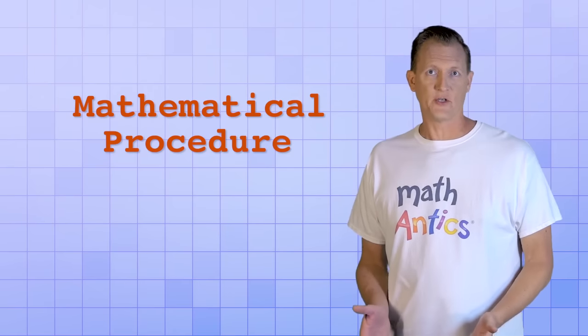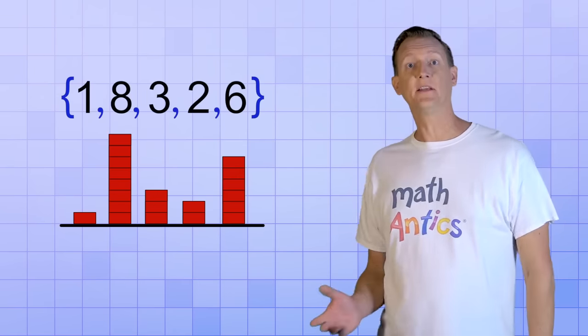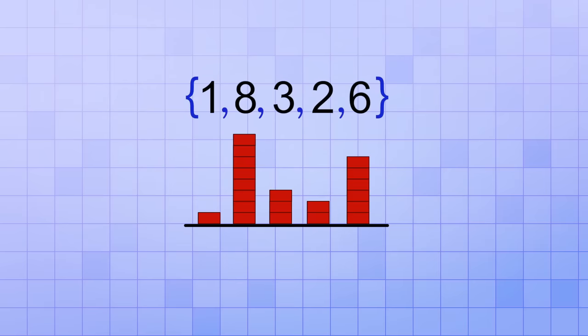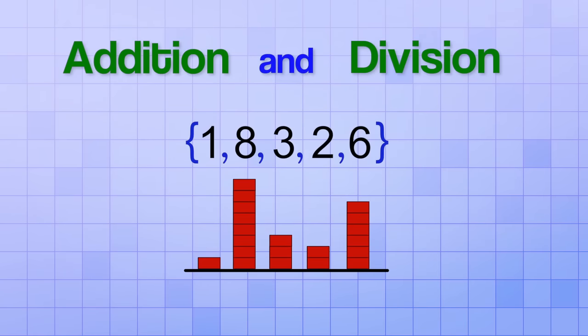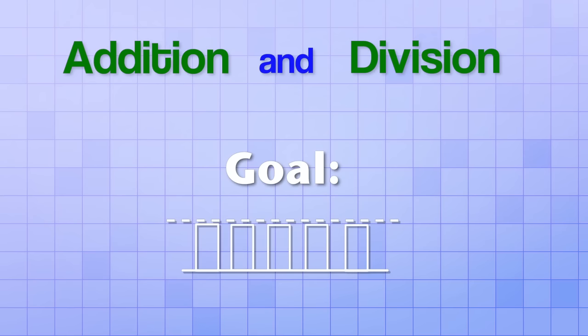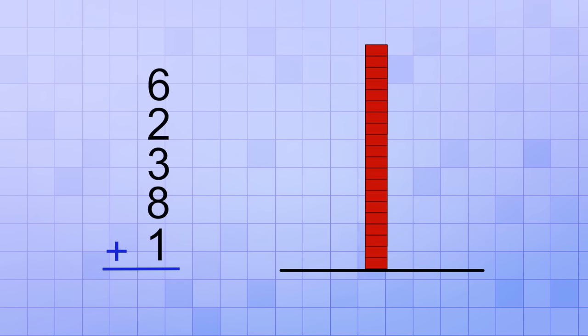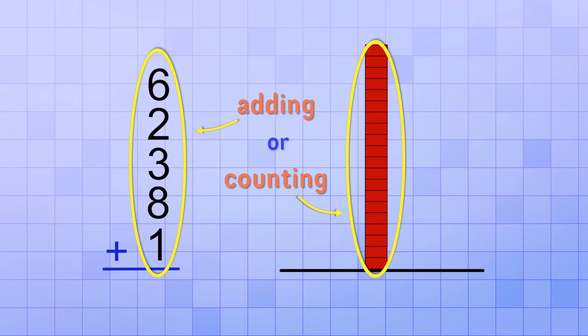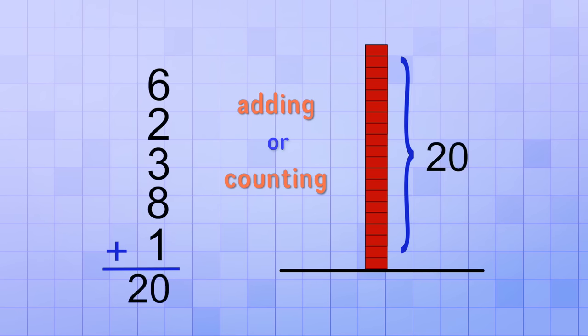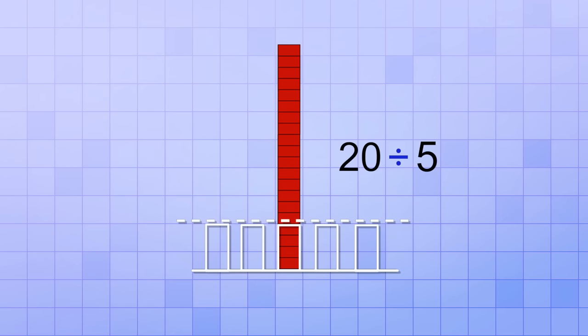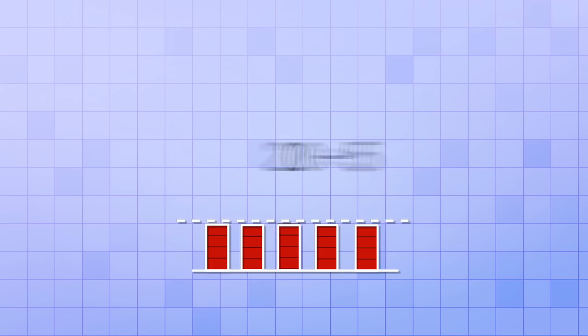To learn the mathematical procedure for calculating the mean, let's start with blocks again. But this time, instead of using trial and error, let's use a more systematic way to make the stacks all the same height. This way involves a clever combination of addition and division. We know that we want to end up with 5 stacks that all have the same number of blocks, right? So first, let's add up all of the numbers, which is like putting all of the blocks we have into one big stack. Adding up all of the numbers, or counting all the blocks, shows us that we have a total of 20. Next, we divide that number, or stack, into 5 equal parts. Since the stack has a total of 20 blocks, dividing it into 5 equal stacks means that we'll have 4 in each since 20 divided by 5 equals 4.